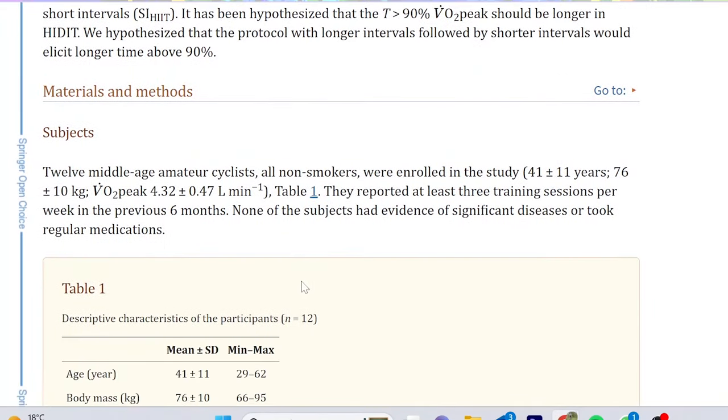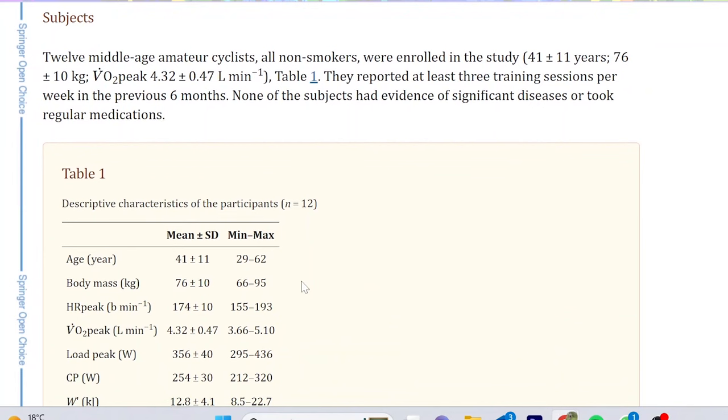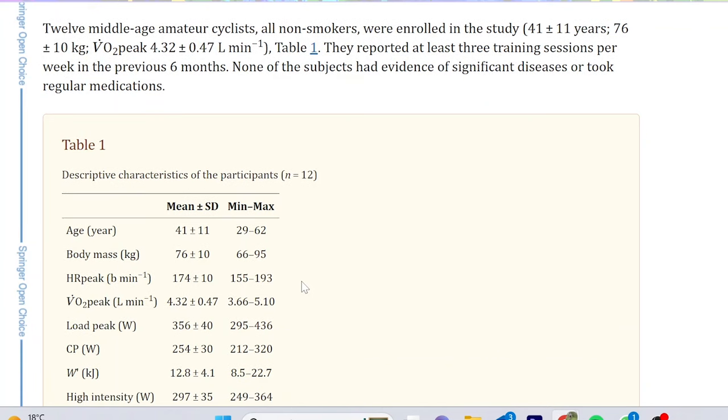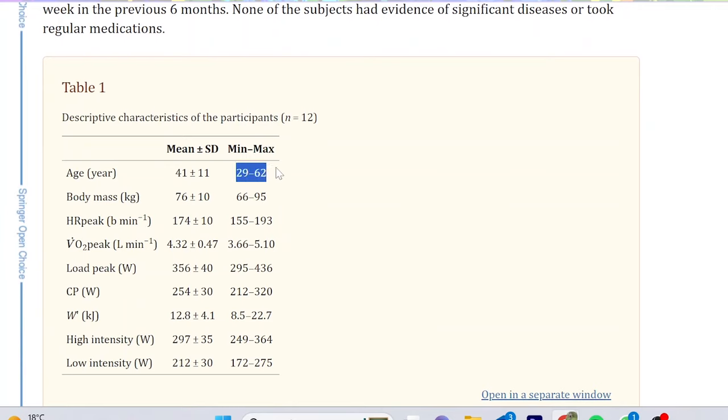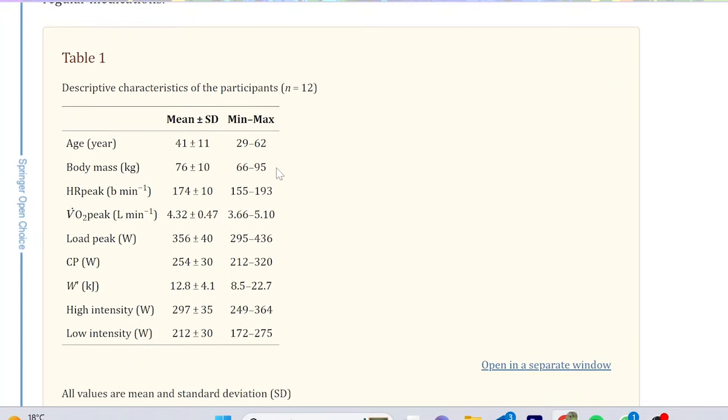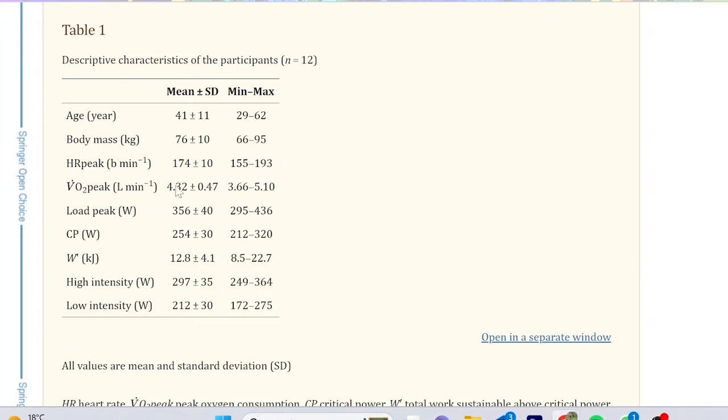I want to talk about the participants because that really drives how important the study is. It's only 12 people, which is okay for sports science but not amazing. Their average age is 41 with a large age range of 29 to 62, which is not ideal. They're quite heavy as well. The main issue is the CP is 254W, which is just not high enough.